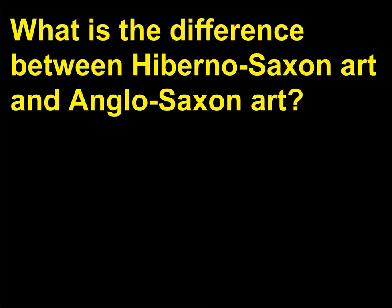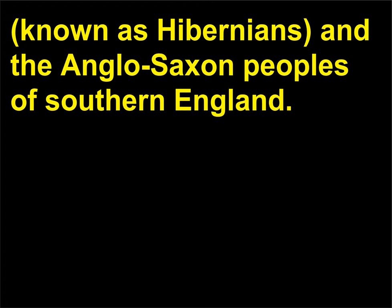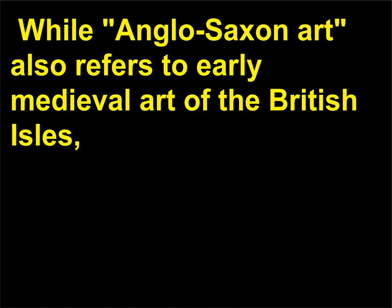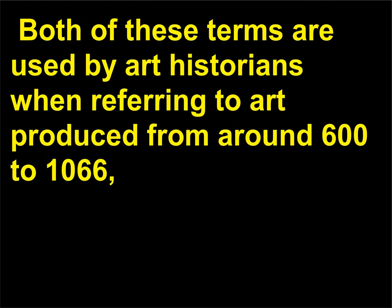What is the difference between Hiberno-Saxon art and Anglo-Saxon art? The term Hiberno-Saxon art refers to non-Christian, pagan art produced after the fall of the Roman Empire by the Irish and the Anglo-Saxon peoples of Southern England. While Anglo-Saxon art also refers to early medieval art of the British Isles, it is more closely associated with Christian themes. Both terms are used by art historians when referring to art produced from around 600 to 1066, the date of the Norman Conquest of Britain.